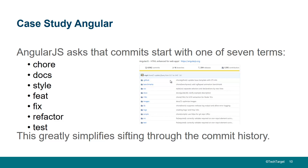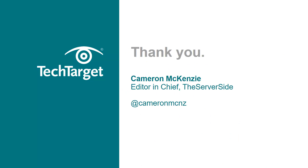They also describe the change in the git commit message as well. Somebody can grep through all of the different commits and maybe just filter out things that have to do with style, documentation, or testing, and look only at the commits that dealt with a feature being added or a fix being implemented. That can really help sifting through commit history when you're trying to find that needle in the haystack while troubleshooting. Anyway, those are some of the best practices for writing git commit messages. For more information on working with git, GitHub, and all the latest DevOps tools, head over to theserverside.com.